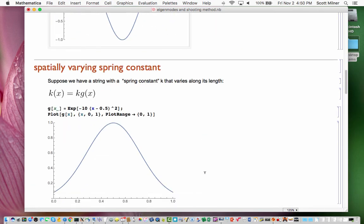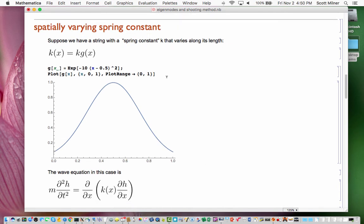Now consider a slightly different problem in which the string has a spring constant k that instead of being a constant, varies along the length of the string. So the function k, what used to be a constant k, is now k of x, and it's equal to some constant k times some g of x, and g of x varies, and so the spring constant in this example is very big in the middle. In other words, the string is very stiff to being stretched and very floppy on the two ends.